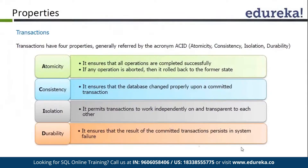Consistency simply means either the transaction is processed completely or it is not processed at all, so the database remains consistent. For example, if we are updating data in three tables and the first table is updated but the second table throws an error, even the data for the first table will be rolled back. The data will always remain consistent — there is no chance it will be inconsistent.